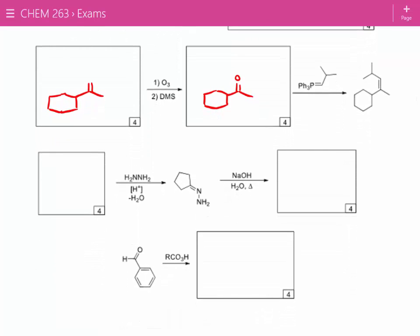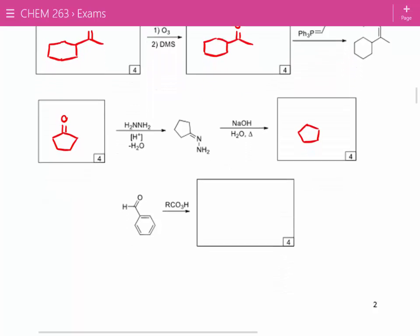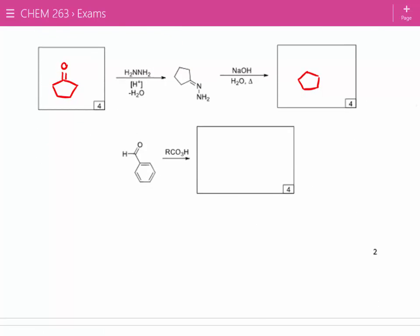Alright, the next one. We've got what looks like a Wolff-Kishner reduction. And so in order to form our imine, we have to have a ketone, which is cyclopentanone. And then our final product is cyclopentane. So in this case, we remove the carbonyl group. Alright, the next one, we've got Baeyer-Villiger oxidation. The hydrogen is more likely to migrate than the phenyl group. So we can actually convert benzaldehyde into a carboxylic acid.